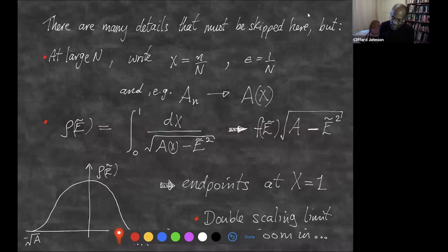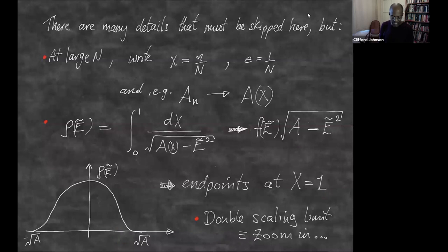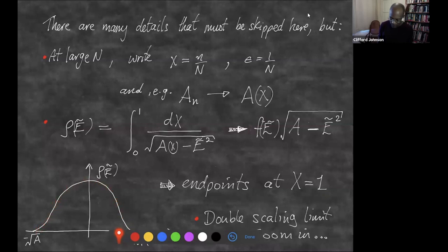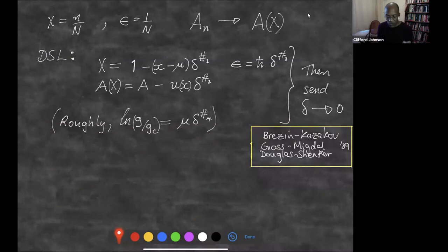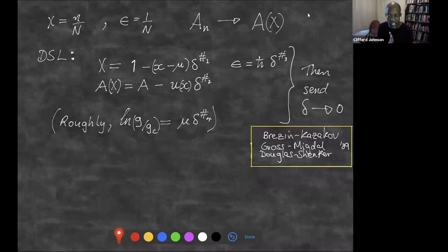In the Gaussian case, a(X) is just a constant and you get the semicircle behavior. The endpoints are at X=1 in this language. The double scaling limit zooms in on the endpoint very carefully. I introduce a parameter delta that I'll send to zero: I go to large N but zoom in on the endpoint with scaled quantities. X is away from 1 by a little bit — some parameter mu times some power of delta. Epsilon is some power of delta, and that's going to be our hbar. The function a is at its endpoint value, scaled away by some power of delta.